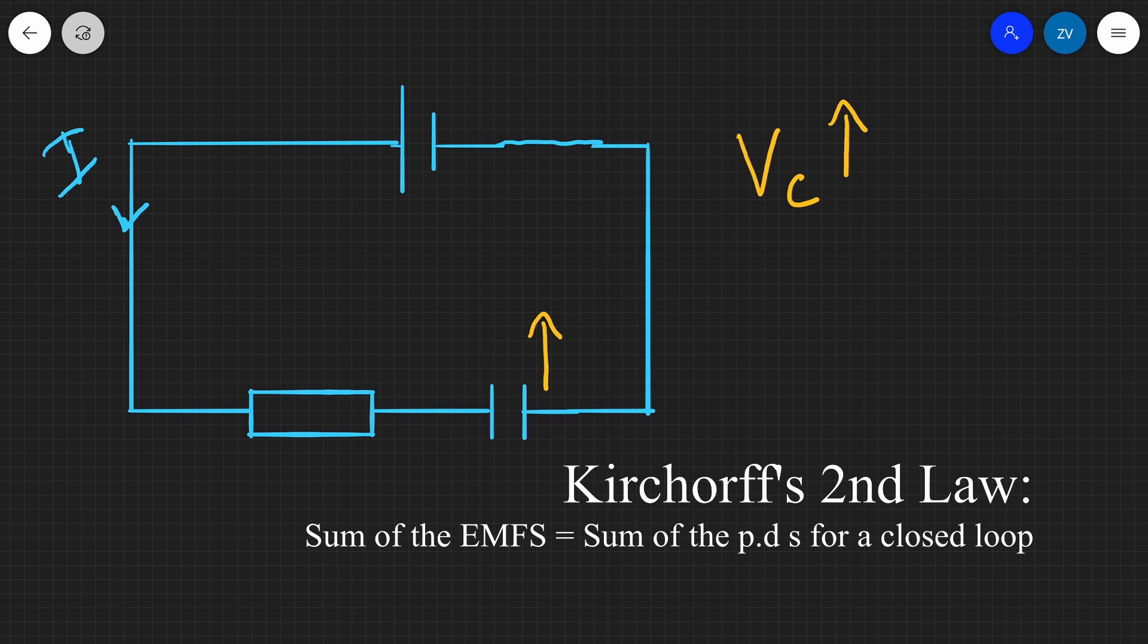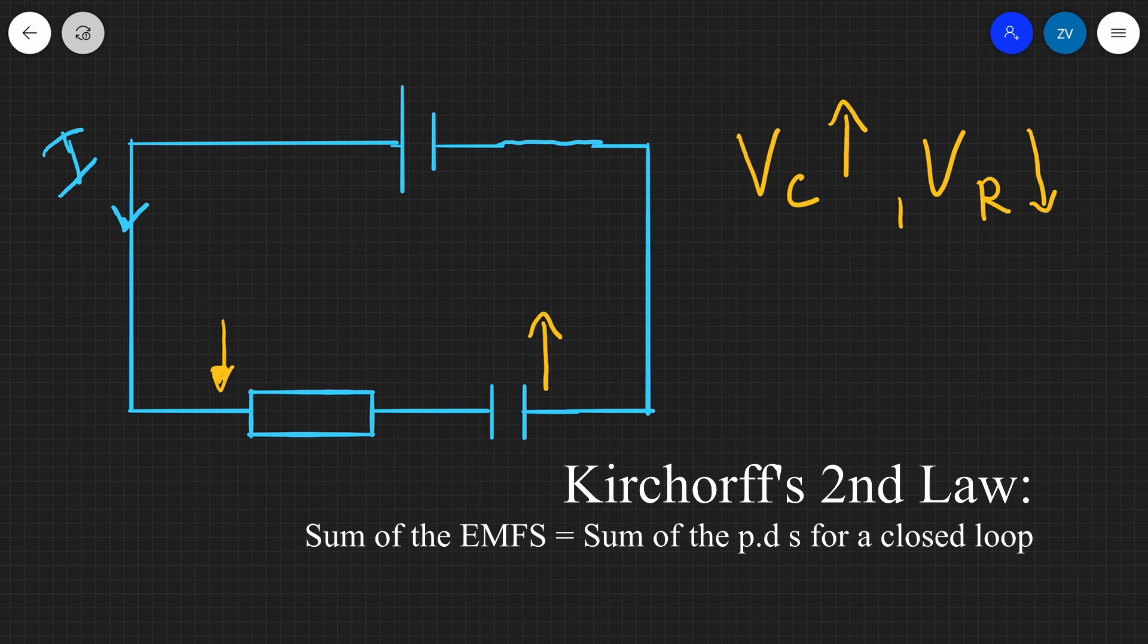Well, the PD across the resistor has to go down because they all need to add up to the amount of EMF. So we can say that the potential difference across the resistor will be going down.